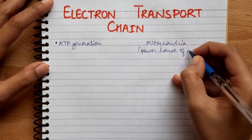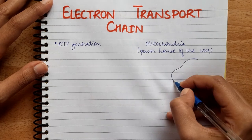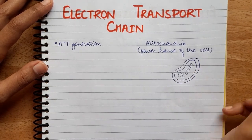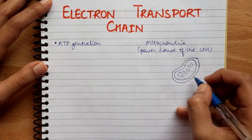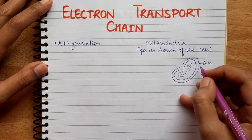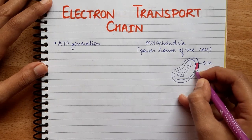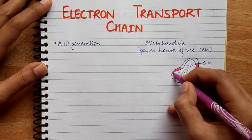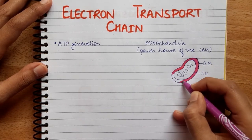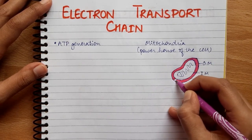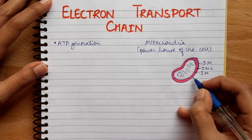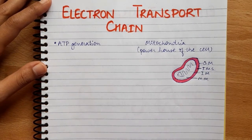Here I am going to make a rough diagram of mitochondria. Mitochondria is a double membrane-bound organelle. This is the outer membrane, this is the inner membrane, and this part here is the inter-membrane space. And this part is the mitochondrial matrix.